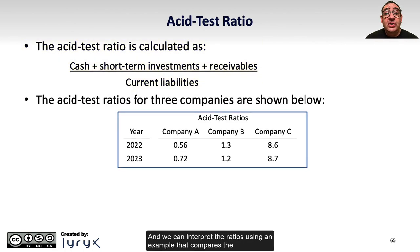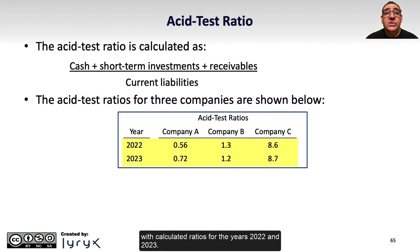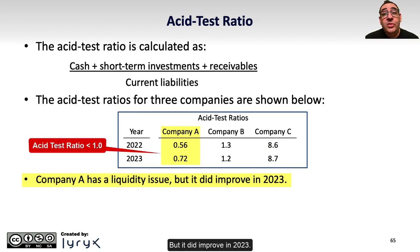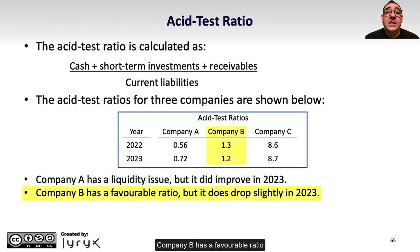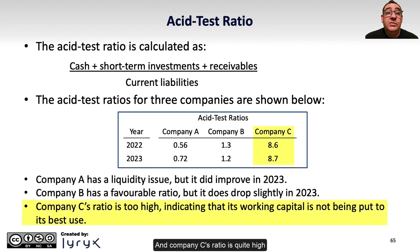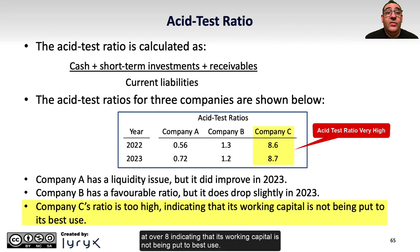We can interpret the ratios using an example that compares the ACID Test Ratios for three companies A, B, and C with calculated ratios for the years 2022 and 2023. Company A has a liquidity issue because the ACID Test Ratio is less than 1, but it did improve in 2023. Company B has a favorable ratio which is greater than 1, but it dropped slightly in 2023. And Company C's ratio is quite high at over 8, indicating that its working capital is not being put to best use.